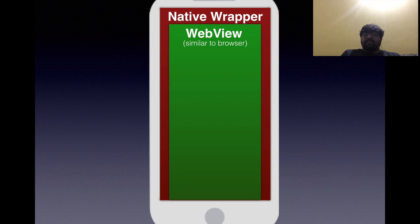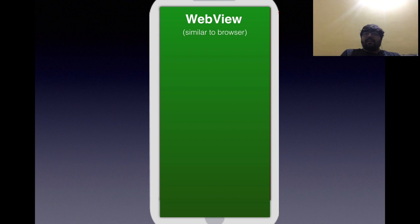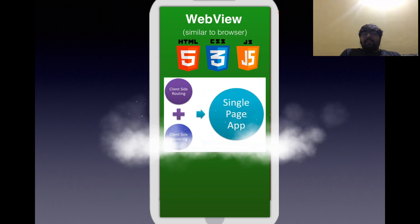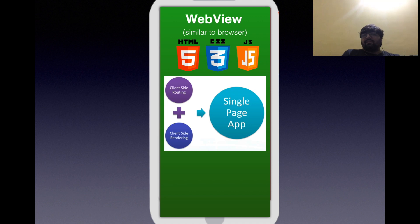Since we have a browser trapped inside a native wrapper that is not visible, we have to code in three main languages inside the browser: HTML5, CSS3, and JavaScript. Since we don't have front and back buttons or page refresh, we need to build our entire routing and rendering on the client side — meaning the only option is to build a single page application.